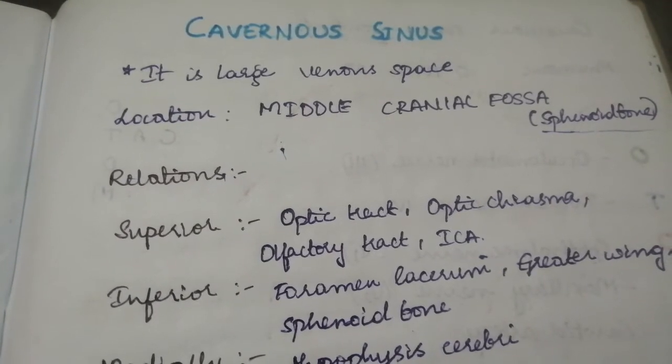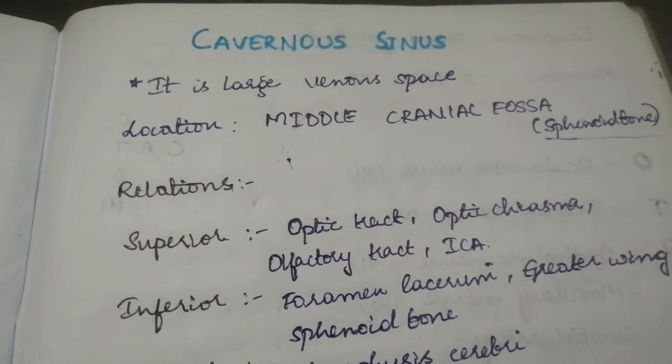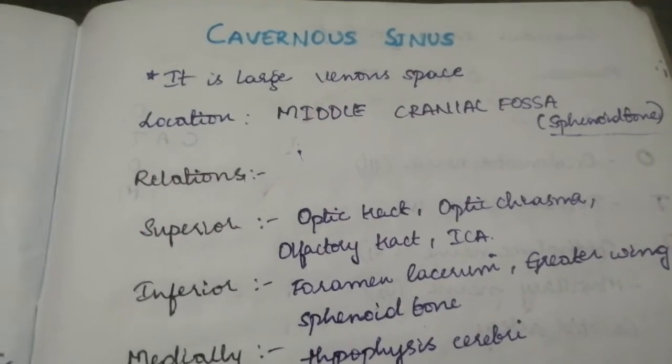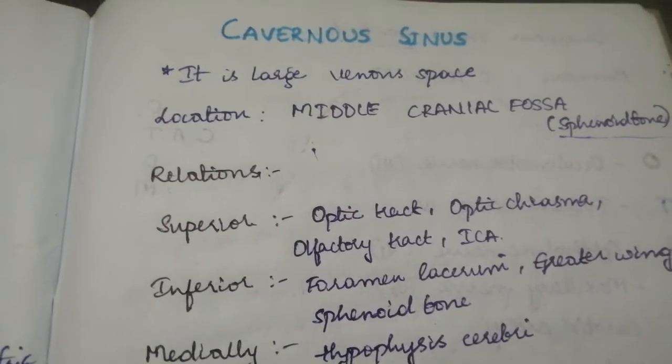Today we learn on the topic of cavernous sinus which is your very important anatomy first year 5 marker. I have some bullet points to cover on this cavernous sinus.